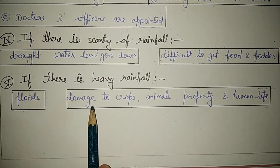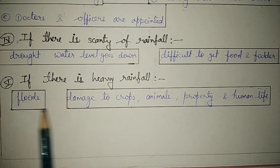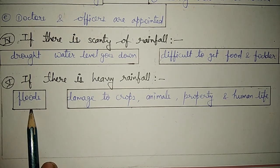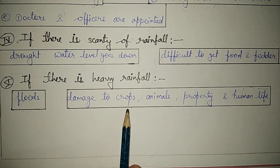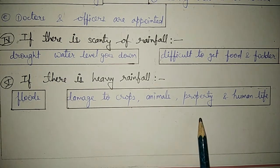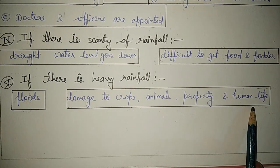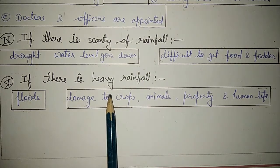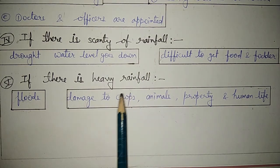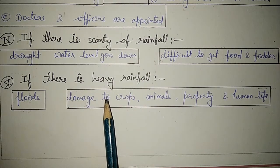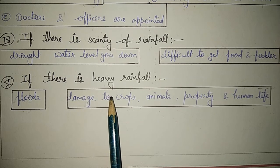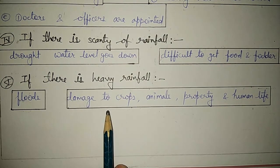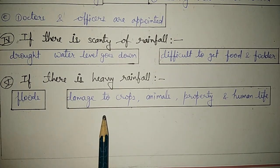The next point is: what will happen if there is heavy rainfall? If there is heavy rainfall it may cause floods, and because of floods we will face very bad effects because it damages all our crops, animals, property, and human life. So in this way, both scanty rainfall and heavy rainfall are very bad for us.